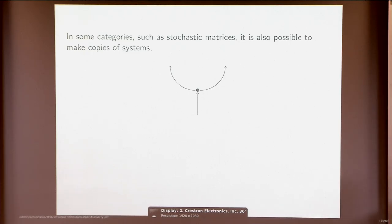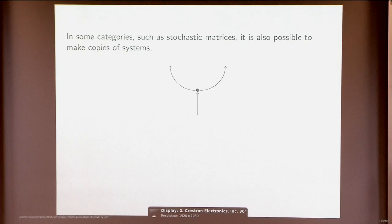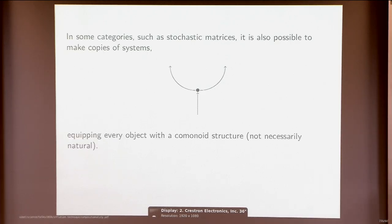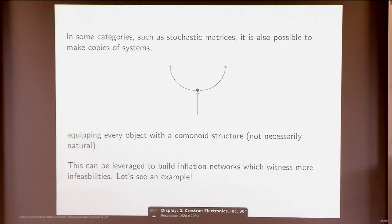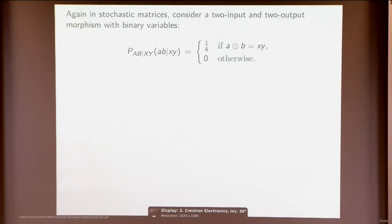There is additional structure that makes the technique more powerful: one can make copies of systems — take a random variable and just copy its value. This equips every object with a comonoid structure, with the discarding operation as the counit. One can write down more inflated networks — inflated networks that also contain this copying operation — to make the inflation technique more powerful.